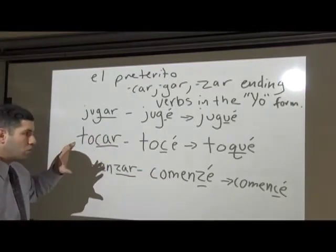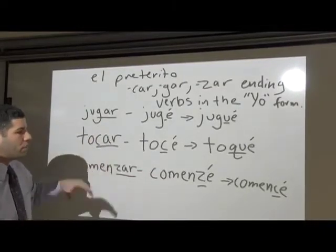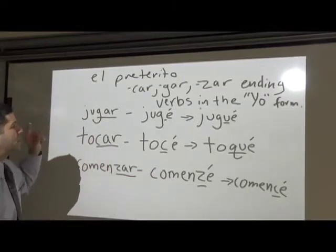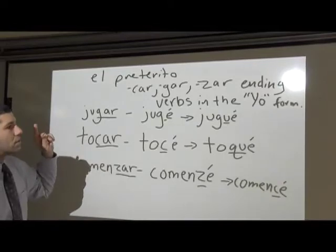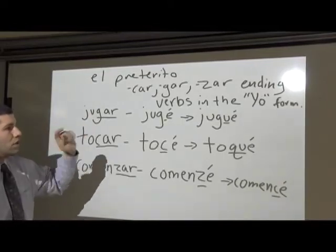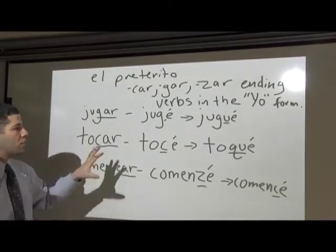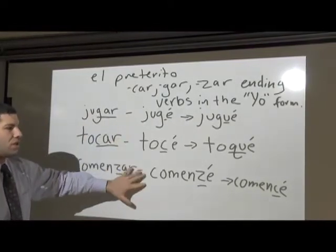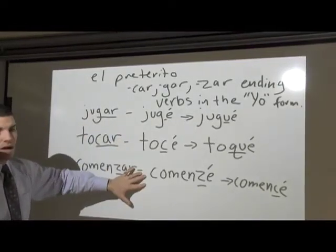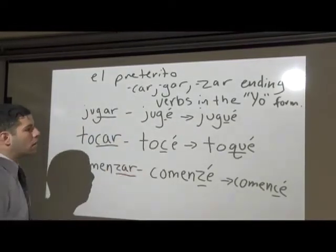CAR, GAR, and ZAR verb changes are only in the yo form in the pretérito — that's the past completed tense — only in the yo form. This is for pronunciation reasons; it's actually pretty logical.